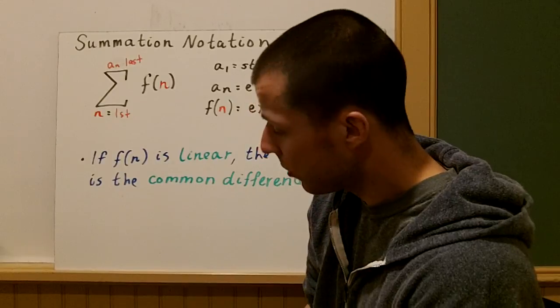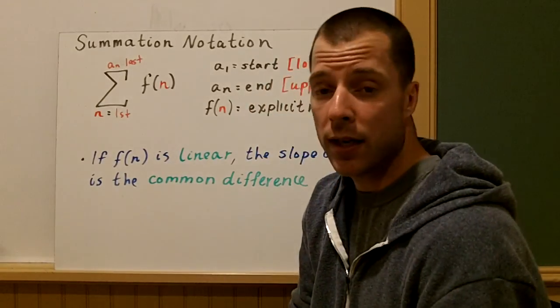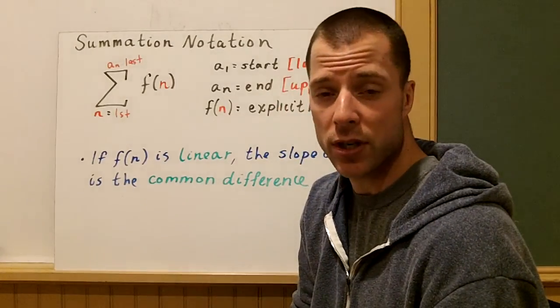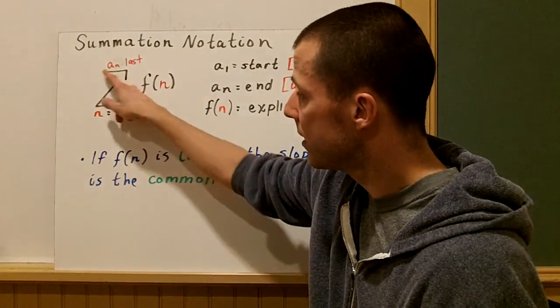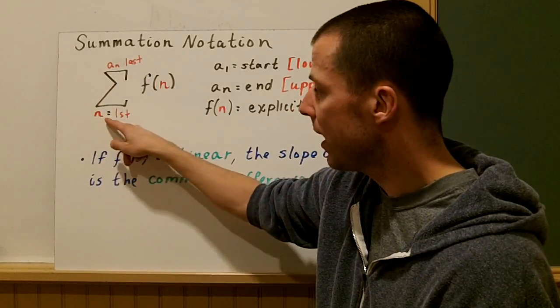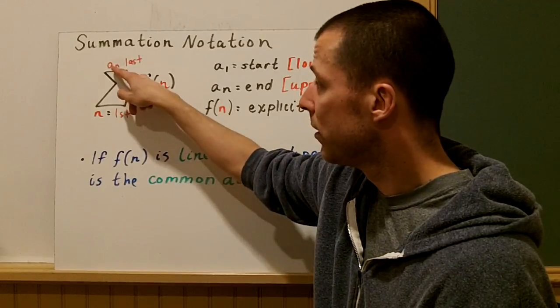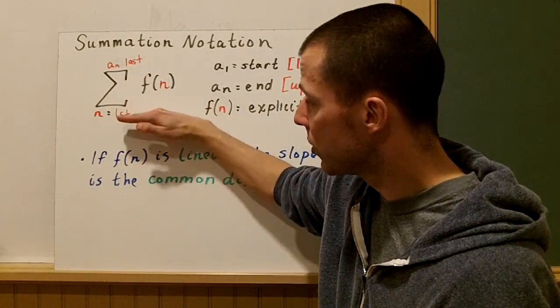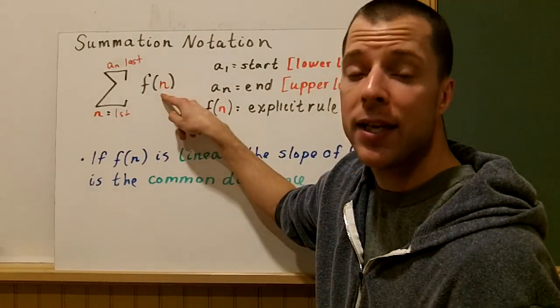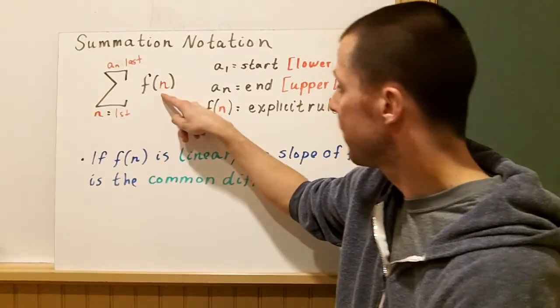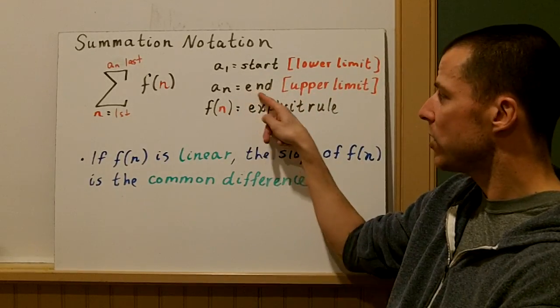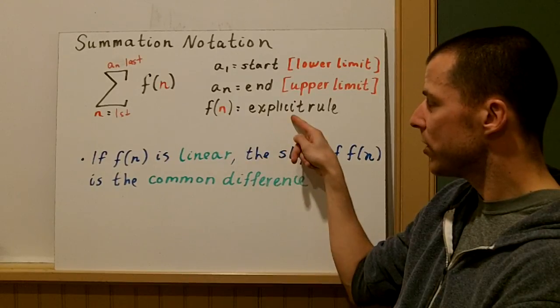Summation notation. There are other ways that we can write a sequence in summation notation. Summation notation really talks about limits. This symbol, it's not really an e, we call that sigma. So this is the general summation notation. You have n equals wherever you're starting from, and a_n, wherever you're ending. So your start, your finish, your lower limit, your upper limit. f(n) is an explicit rule for your series.